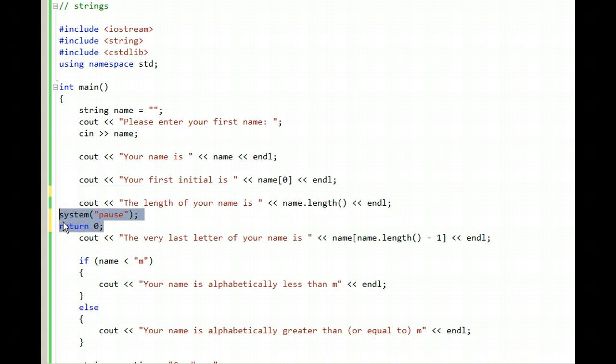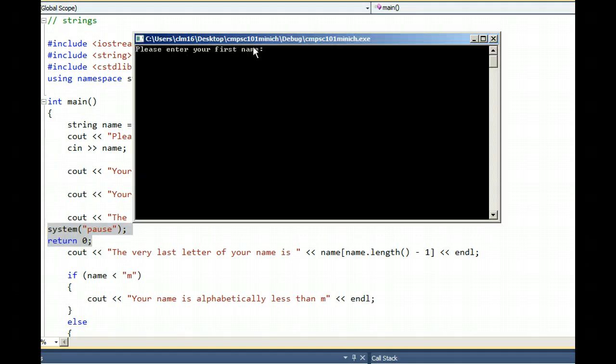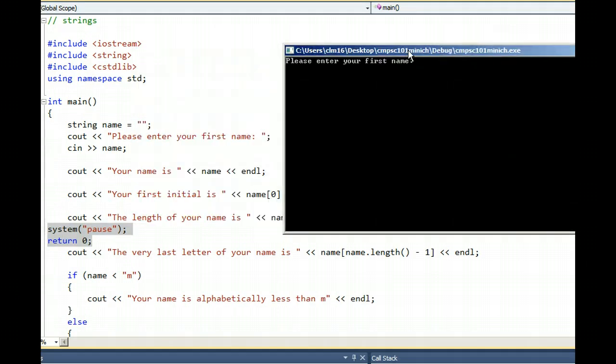The last letter of my first name could be accessed by typing the number that corresponds to the position of that last letter: zero, one, two, and three. That N is in position three.